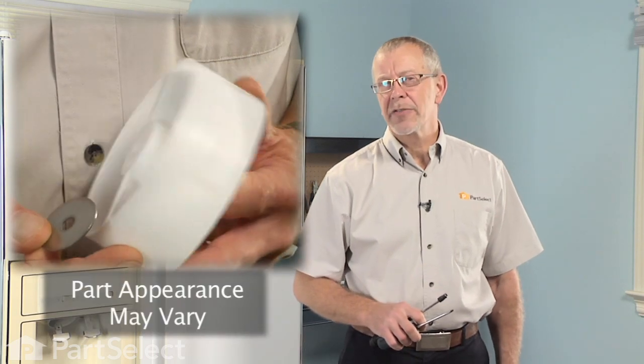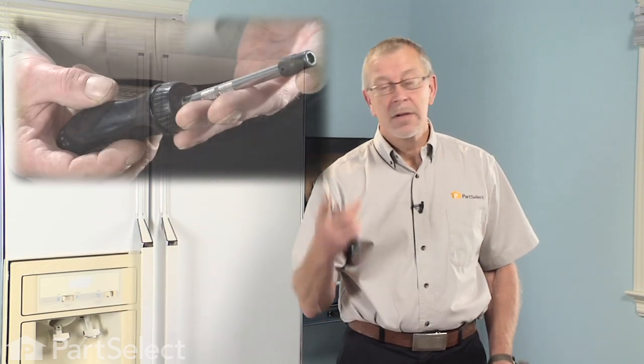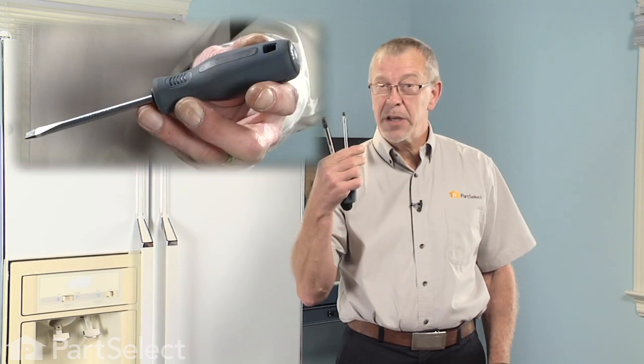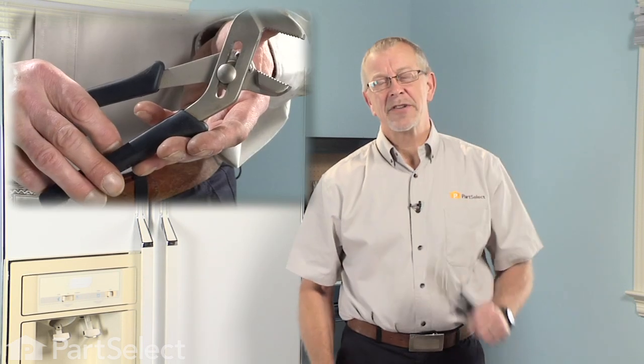Hi, it's Steve from PartSelect. Today we're going to show you how to change the ice bin auger drum on your refrigerator. It's a pretty easy job, only going to need a few tools: a quarter inch nut driver, a flat blade screwdriver, and probably a pair of channel locks. Let me show you how to do it.